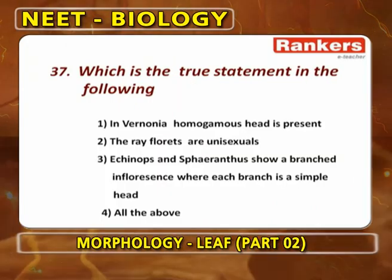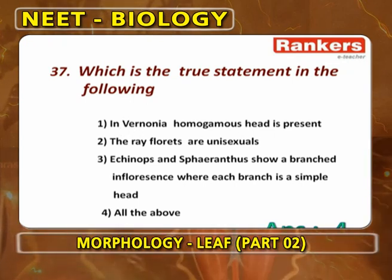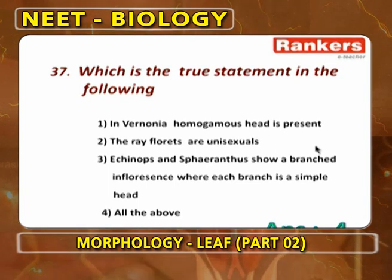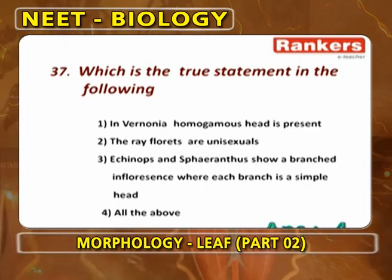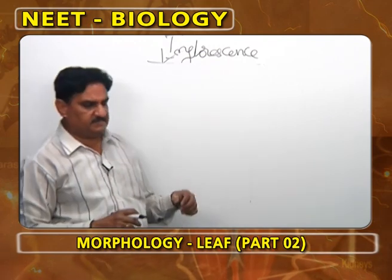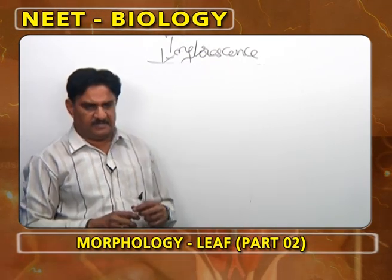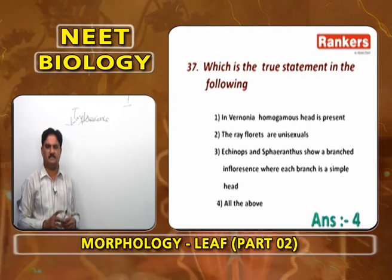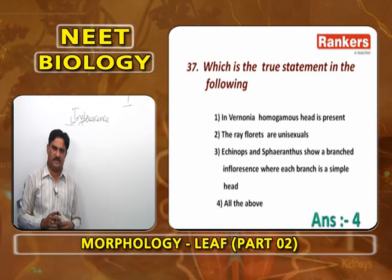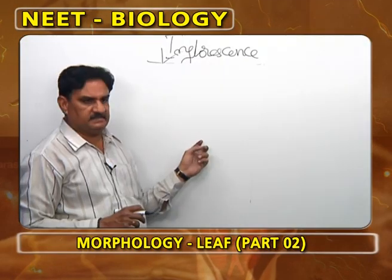Which is the true statement? In Vernonia, homogamous head is present — correct, with all disc florets. Ray florets are unisexual — correct, because only gynoecium is present and androecium is completely absent. Echinops and Spiroanthes show branched inflorescence where each branch ends with a simple head — correct, that is compound head. All the above statements are correct.